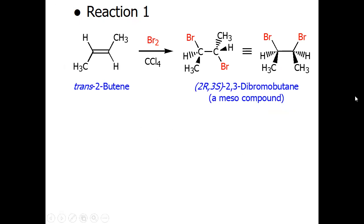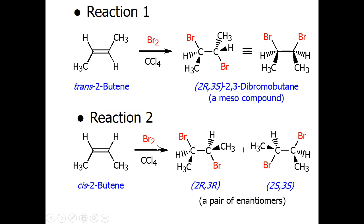One more example: with trans-2-butene and bromine we get 2R,3S-2,3-dibromobutane, a meso compound — both structures shown are the same compound. In reaction two, with cis-2-butene and bromine we get a mixture of enantiomers, in which one molecule contains two R configurations while the other contains two S configurations. We have already discussed how to determine R and S configurations in an earlier lecture.